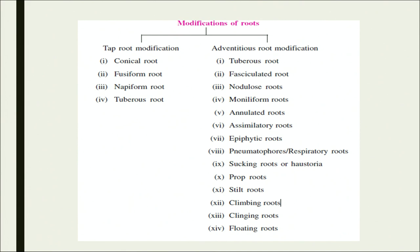Now we shall talk about the second category in the table: adventitious root modifications. These include tuberous root, fasciculated root, nodulose root, moniliform root, annulated roots, assimilatory roots, epiphytic roots, pneumatophores or respiratory roots, sucking roots, prop roots, stilt roots, climbing roots, clinging roots, and floating roots.